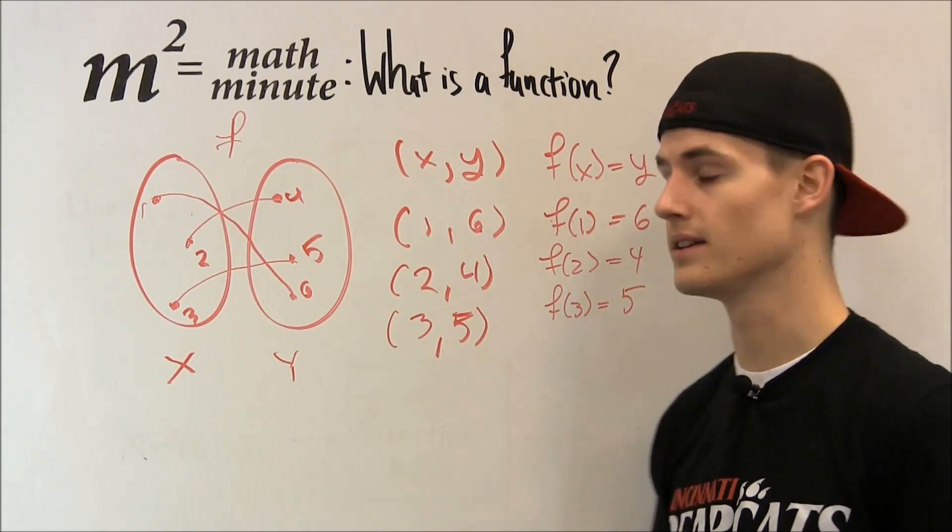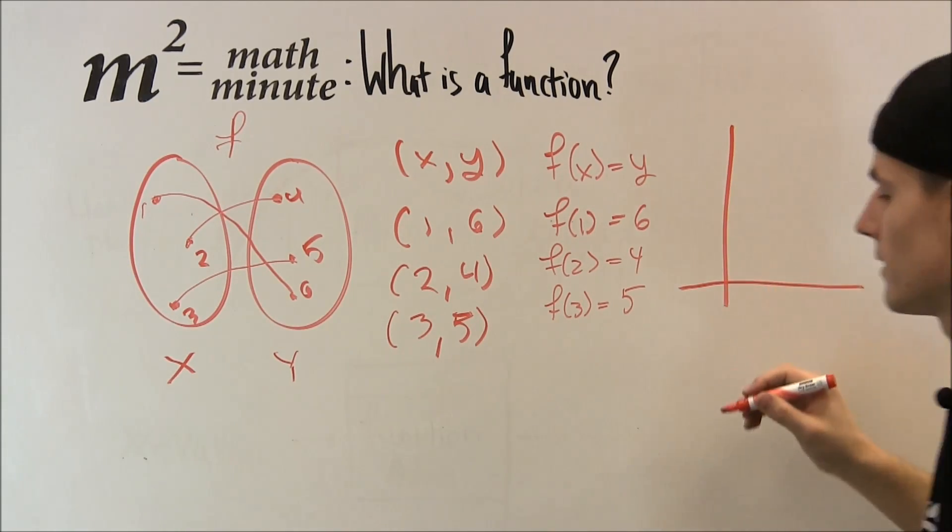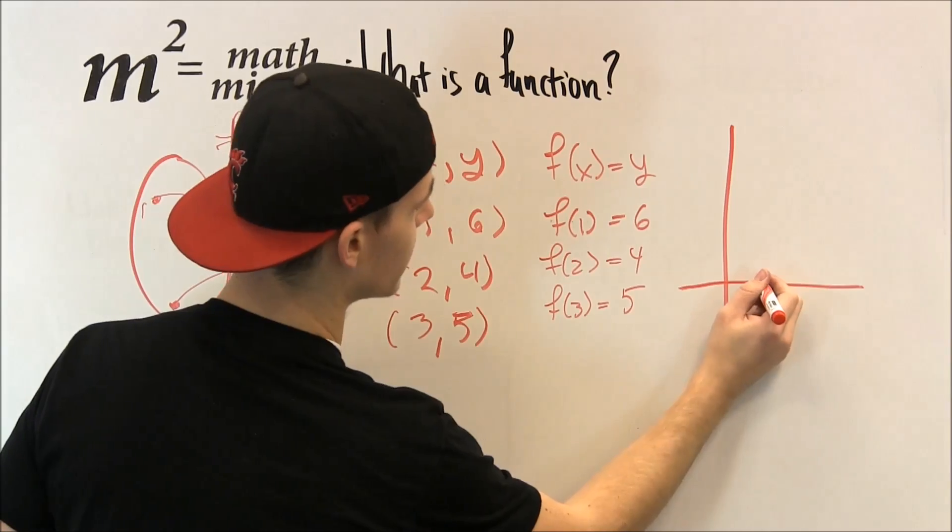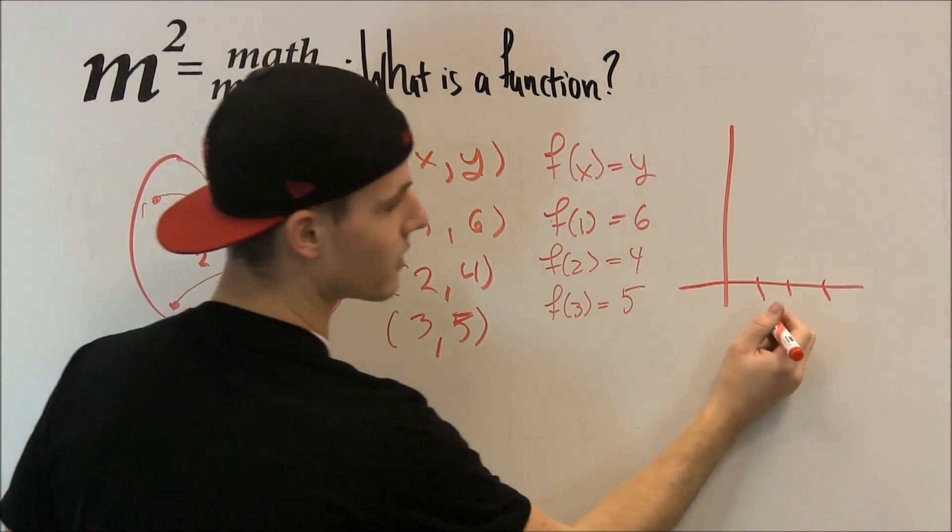We can also graph this. And this way is done like this. Let me switch sides. And if we were to mark these off, we have 1, 2, and 3. So these are our x values. 1, 2, 3.